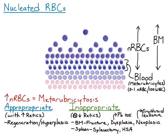To summarize: metarubrocytosis is an increased number of nucleated red blood cells in circulation beyond one NRBC per 100 white blood cells. It is classified as appropriate or inappropriate based on the presence or absence of concurrent regeneration.